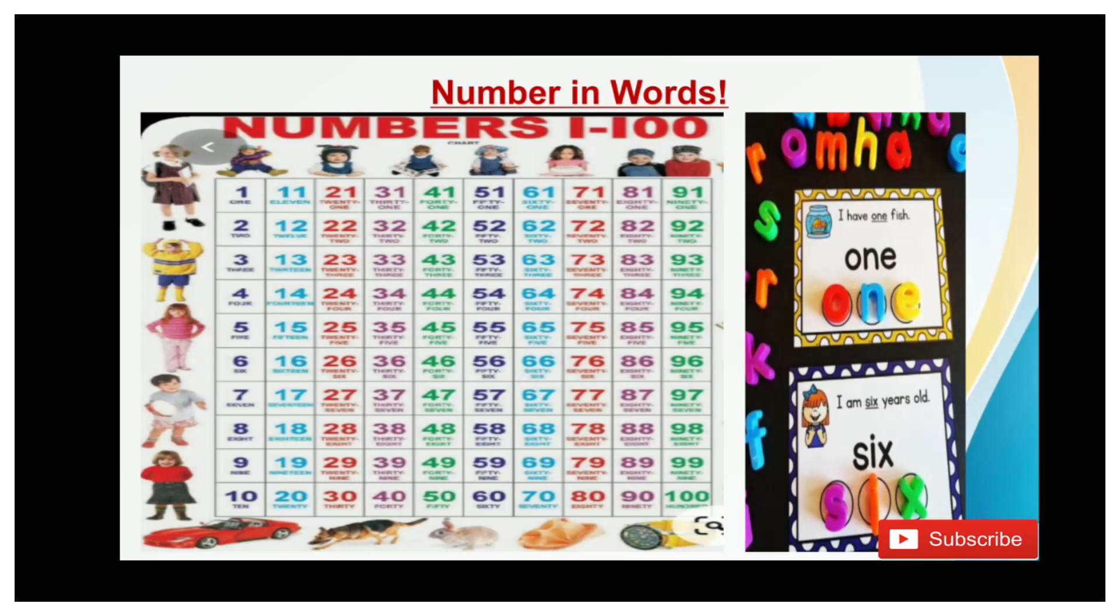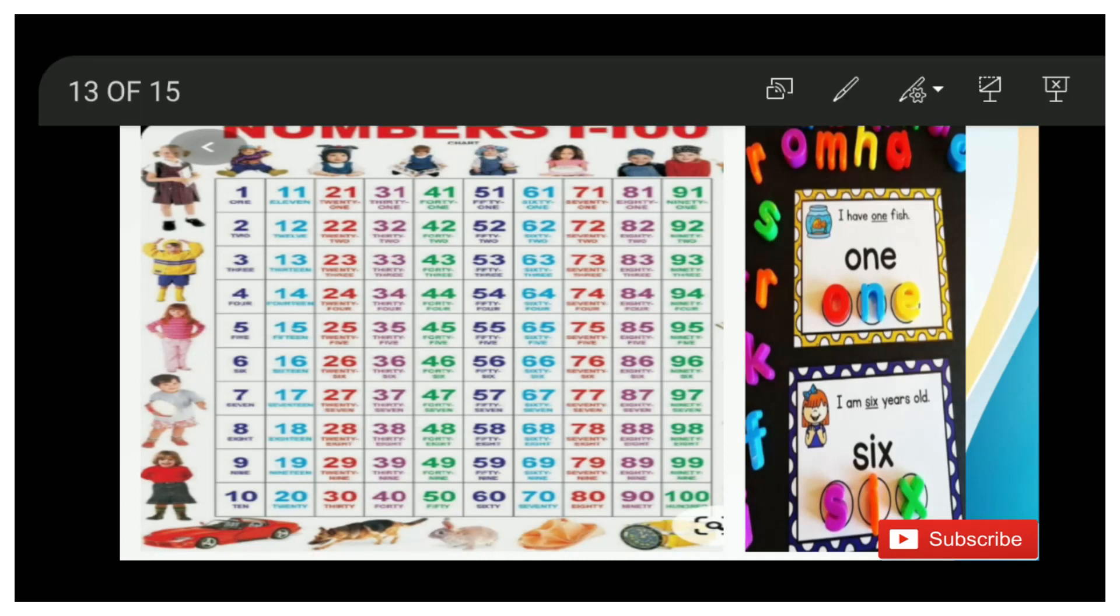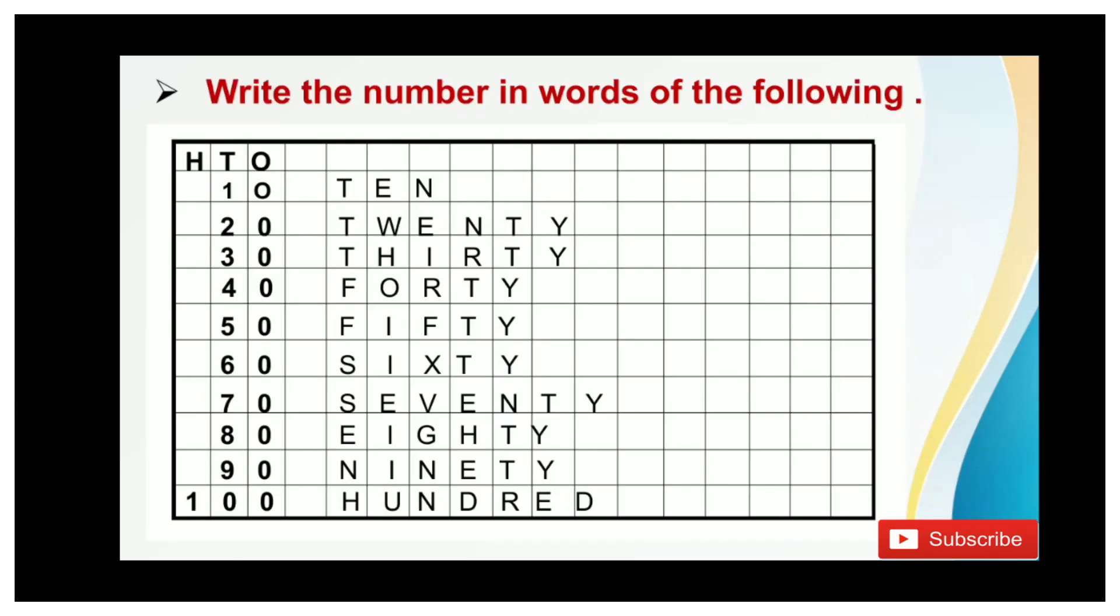As you can see, numbers are given in words. You have to revise the number in words from 1 to 100. Do you remember? O N E is 1, T W O is 2. Now write down the number in words of the following: 10, 20, 30, 40, 50, 60, 70, 80, 90, 100. Write down the number in words from 10 to 100 in your math book. Follow the given pattern and do your work neat and clean. Learn the spelling also.